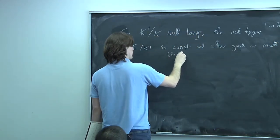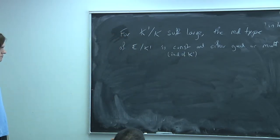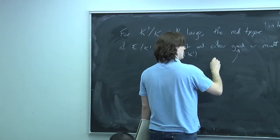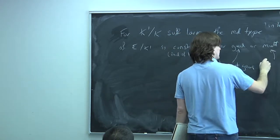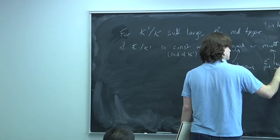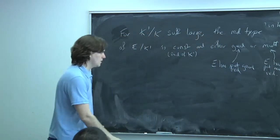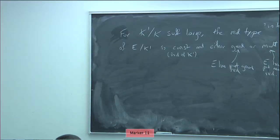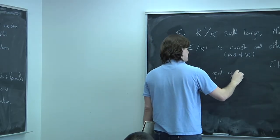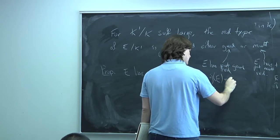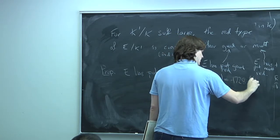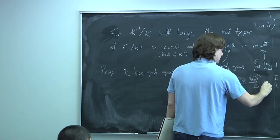By constant here I mean it's independent of the choice of K'. In the first case we say E has potentially good reduction, and in the second we say E has potentially multiplicative reduction. E has potentially good reduction if and only if its j-invariant — which is -1728 · 4a³/Δ — is integral.